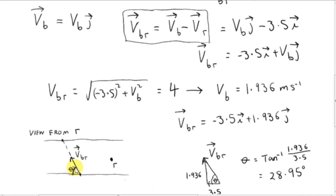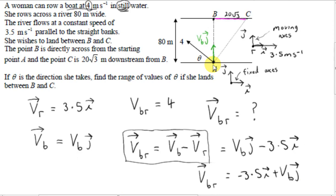So even though she wants to row the boat directly from point A to point B across the river, as seen from point R moving in the river, she appears to be moving at an angle of 28.95 degrees to the shore — measured clockwise from the shore. She has to enter the river at this angle theta if she wants to row the boat directly across. Next, we need to find the angle she needs to enter the river at in order to go from point A to point C.